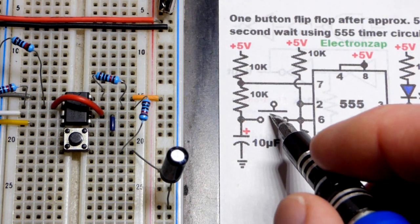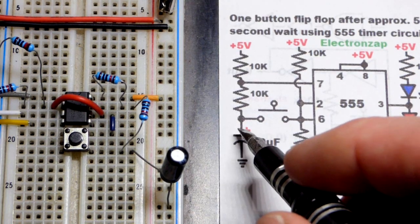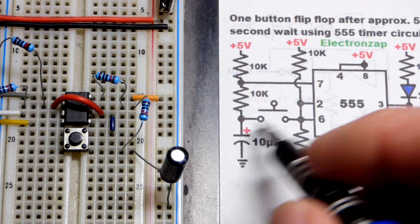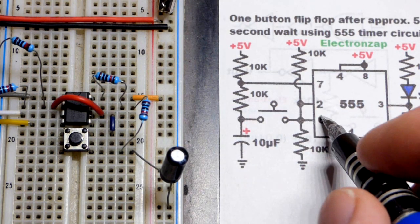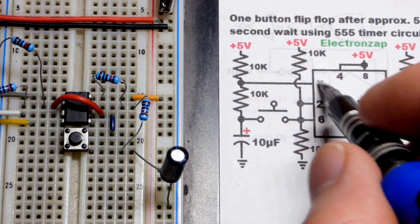Now, I press the switch. After it charges, then it has the full supply voltage. But over two-thirds supply voltage, pin 6 sees that. It sets the output low, connects to ground.